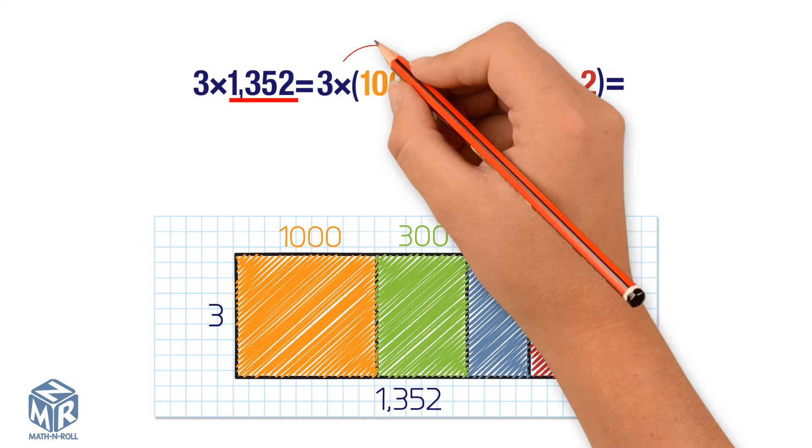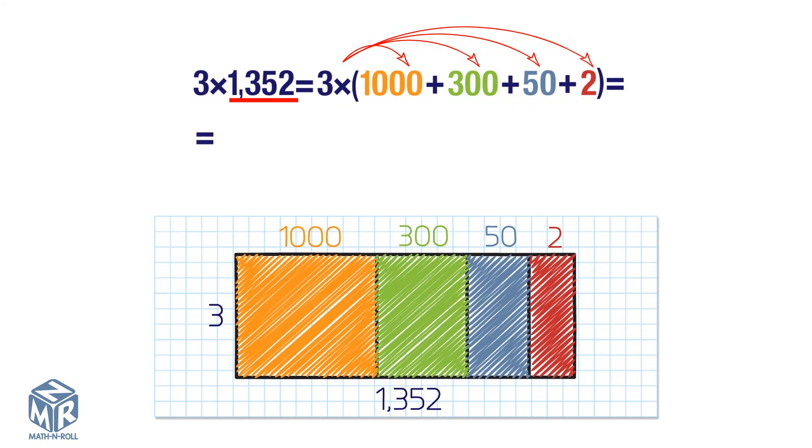Use the distributive property to solve. 3 times 1,000 plus 3 times 300 plus 3 times 50 plus 3 times 2.